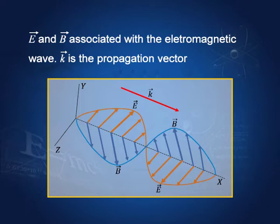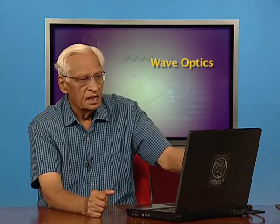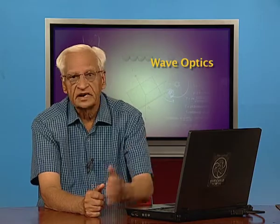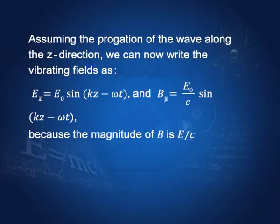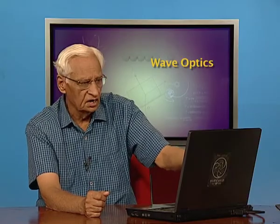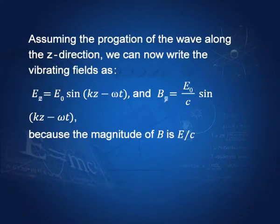You can see that they are in phase. Assuming propagation of the wave along the z direction, we can write the vibrating fields as: E_x along the x direction equals E₀ sin(Kz − ωt). K is the wave number, ω is the frequency, and E₀ is the amplitude of the electric field.